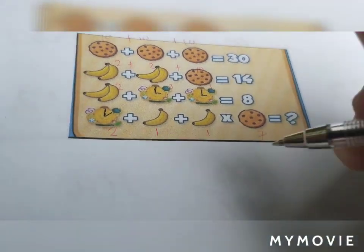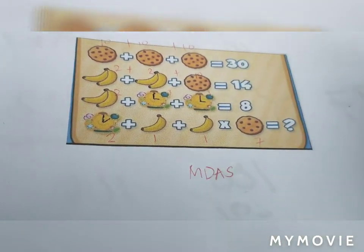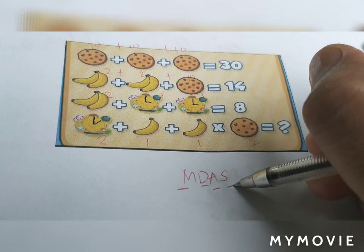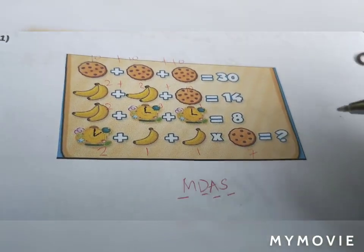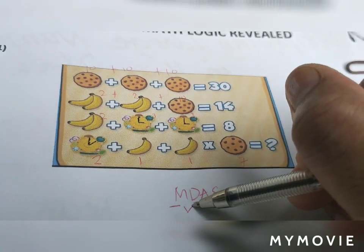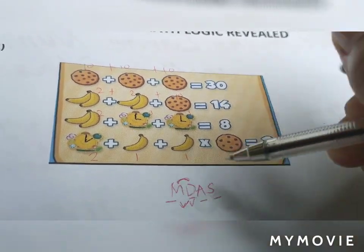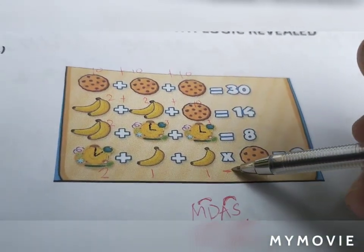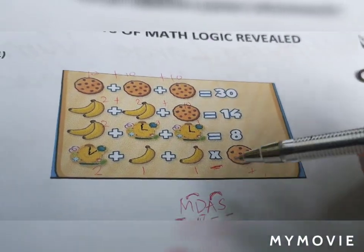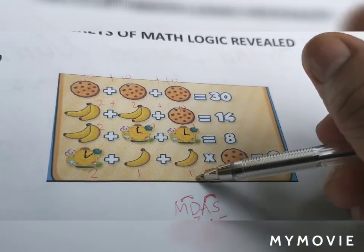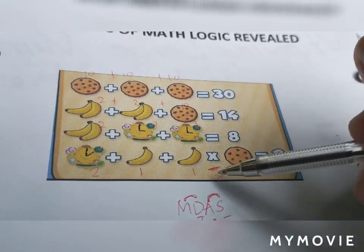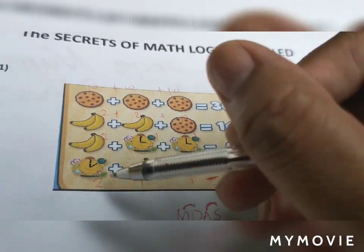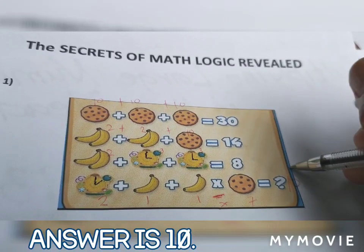To solve the equation, follow the MDAS rule — meaning Multiplication, Division, Addition, and Subtraction. Since multiplication comes first in MDAS, we multiply first: one times seven is seven. Plus one because of addition, that is eight. Plus two, that is ten. Therefore the answer for this one is equal to ten.